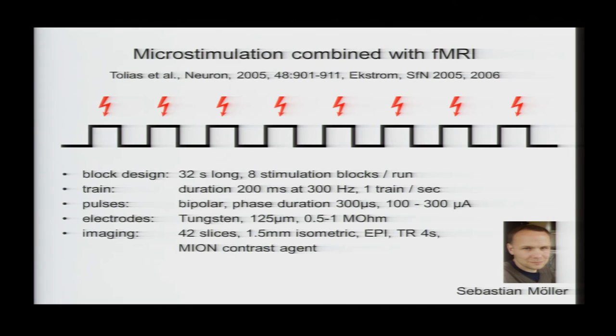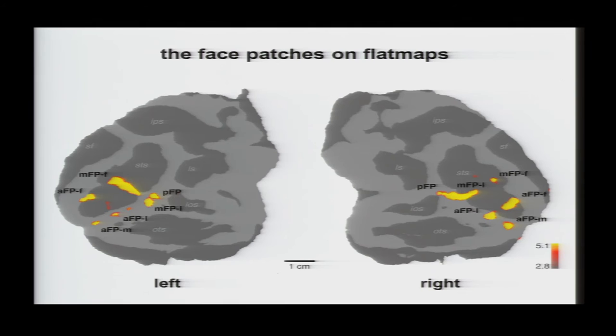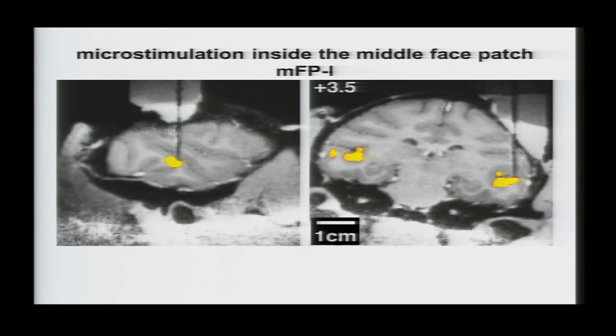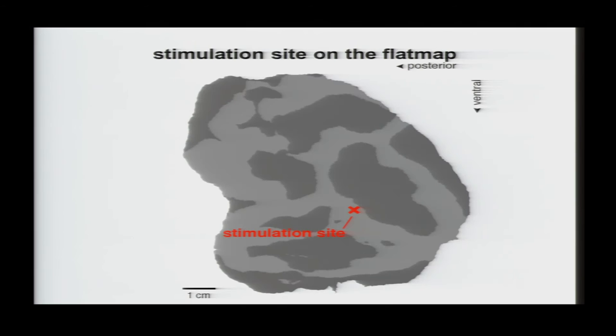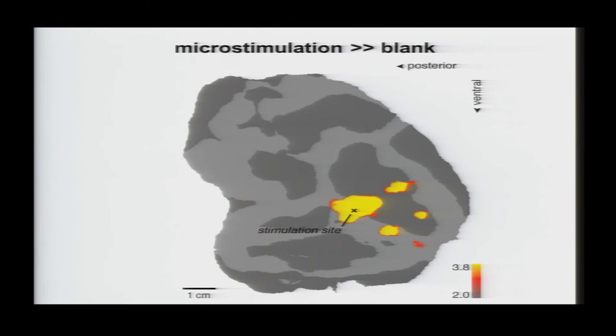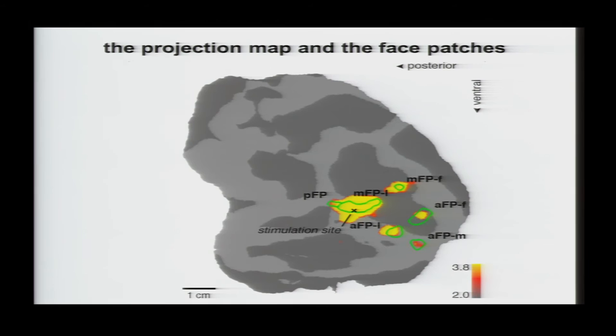So here you can see the face patches for one monkey shown on these flat maps. Here they're shown in the green outlines. And here you can see an MRI image of the electrode going into the face patch. And there's the stimulation site on the flat map. And here's the comparison of activation during micro-stimulation versus activation during no micro-stimulation. So again, the monkey was looking at a blank screen the whole time, and we're stimulating at that region. And you can see that there's spread around the stimulation site, plus these four discrete projections, which coincide with the other face patches.